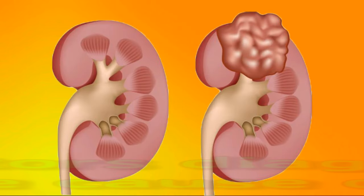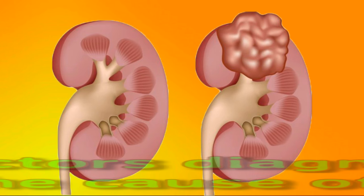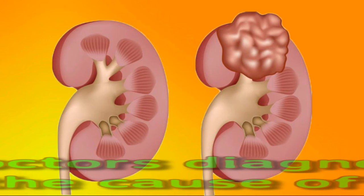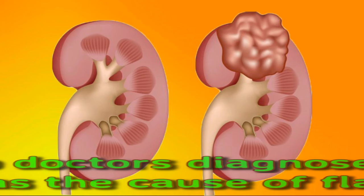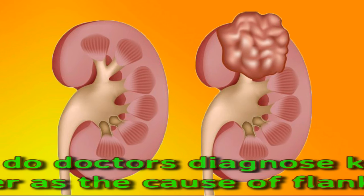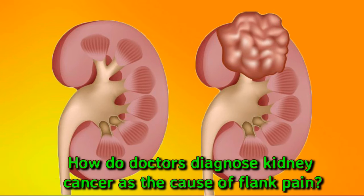Doctors diagnose kidney cancer by reviewing a person's medical history, asking questions about symptoms, performing a physical exam, and ordering tests. Imaging tests provide pictures of the kidneys to determine the presence of a tumor. Some types of imaging tests may help identify whether a tumor is solid or a fluid-filled cyst.